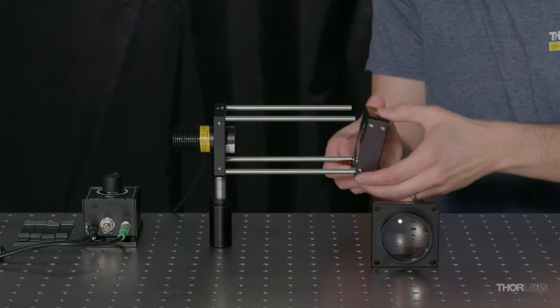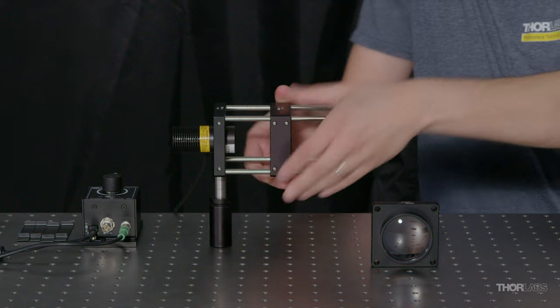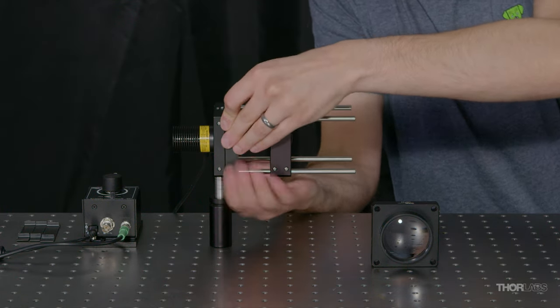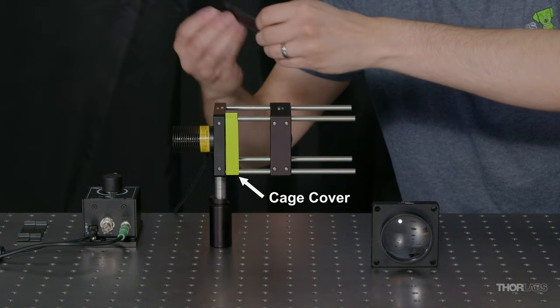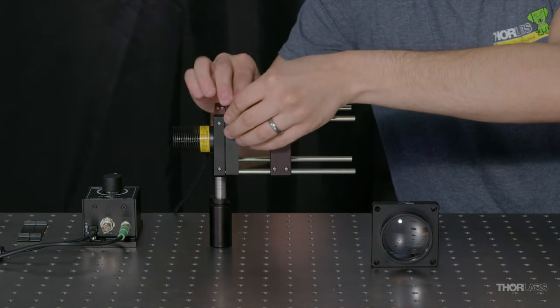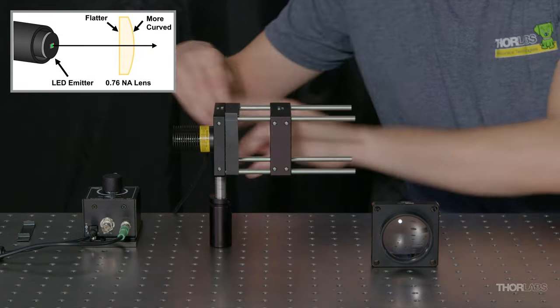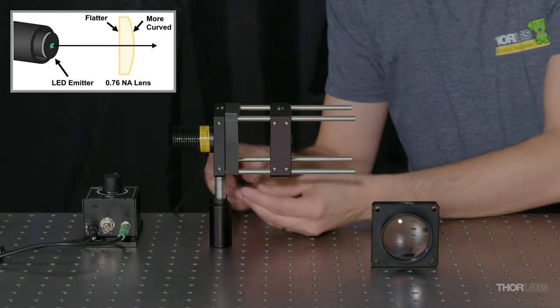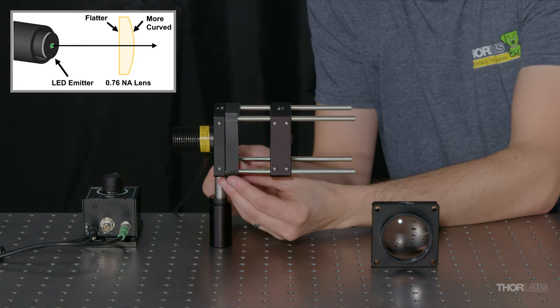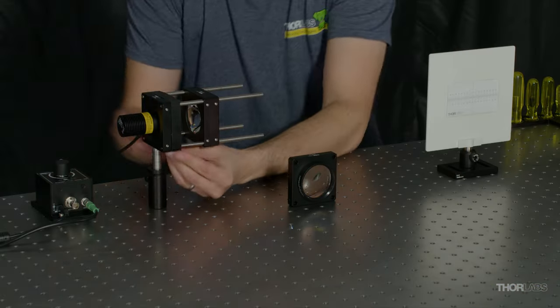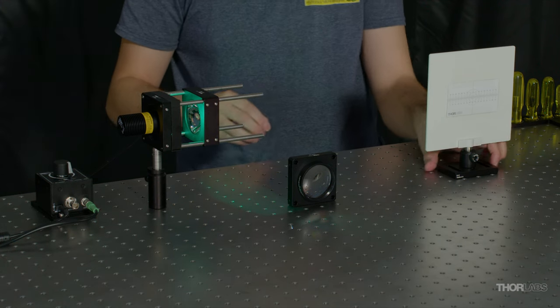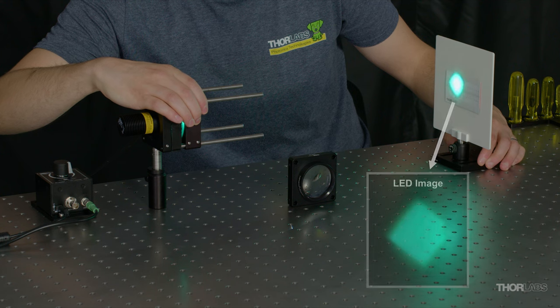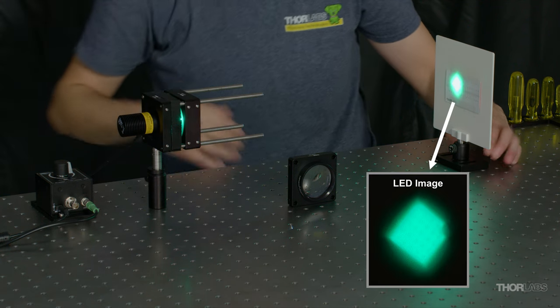Even with the 0.76 NA, we still lose some of the optical power due to overfilling of the lens with this very divergent LED, so I'll use cage covers to block most of the stray light that we do not collect. I've placed this lens into my beam path with the flat side facing my LED to minimize the amount of spherical aberration, and I adjust the lens position until I see an image of the LED emitter on the viewing screen.